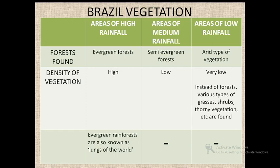Now we will study about vegetation in areas of medium rainfall. The number of rainy days and amount of rainfall is comparatively less, so we find semi-evergreen forests in such areas and the density of vegetation is comparatively low. Third, vegetation in areas of low rainfall — the number of rainy days and amount of rainfall is very low. Hence arid type of vegetation is found, with very low density, and instead of forests we find various types of grasses, shrubs, and thorny vegetation.